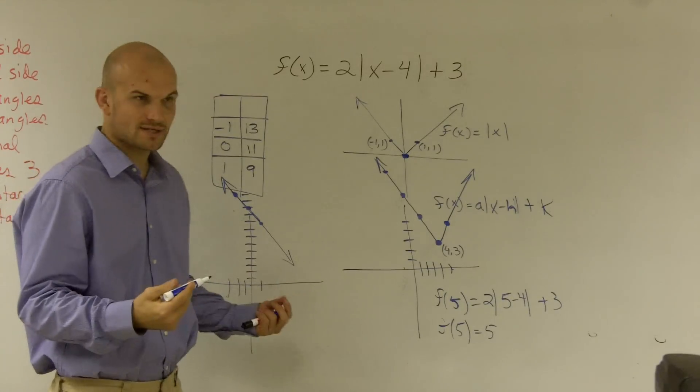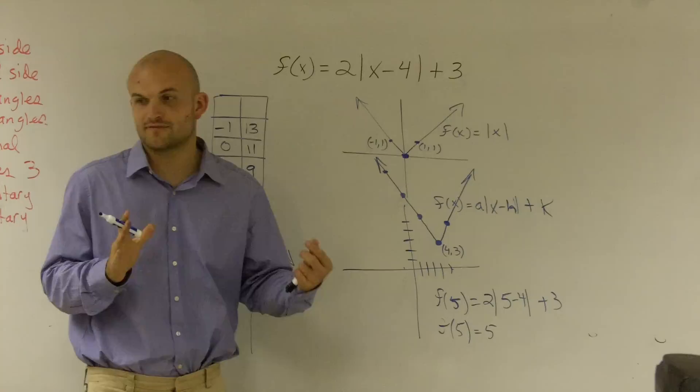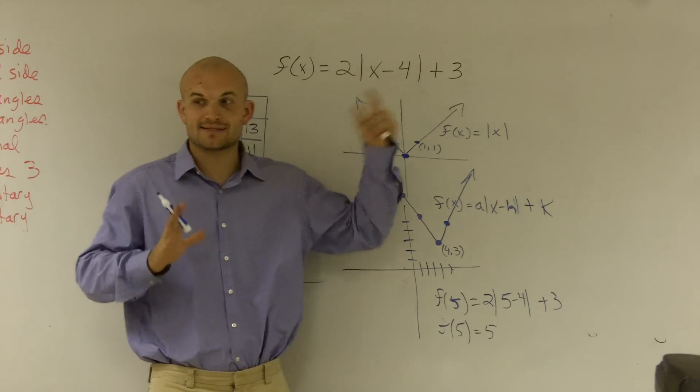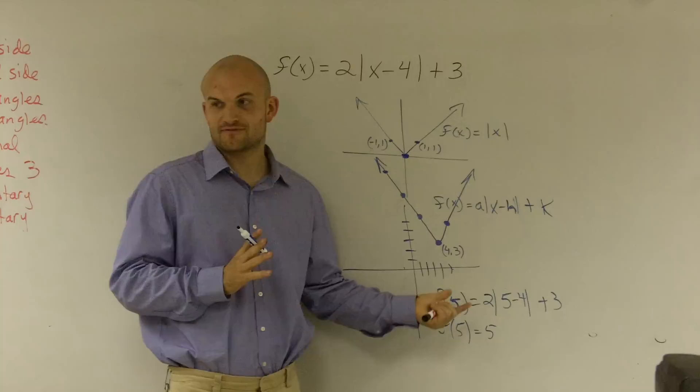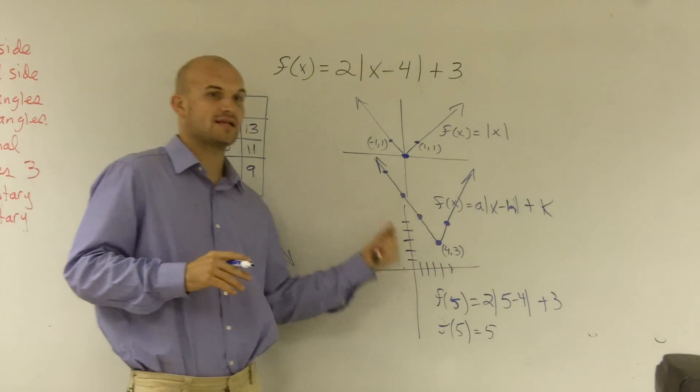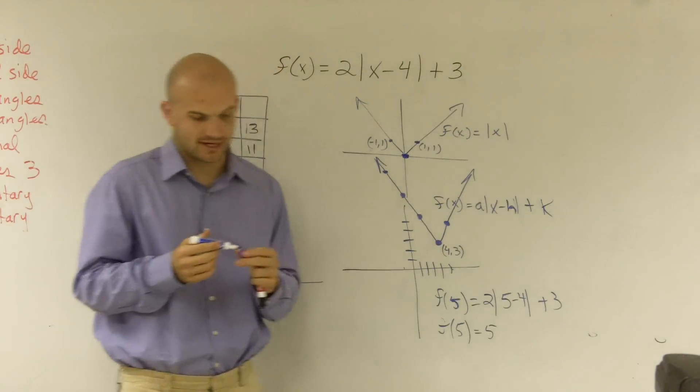And there you go. You guys see how that works? So whenever you're graphing absolute value function, especially whenever you see a shift left or right, make sure you find the vertex first by using your transformations, and then plugging points to the left and a point to the right of the vertex.